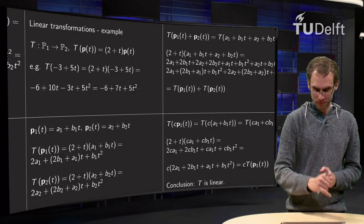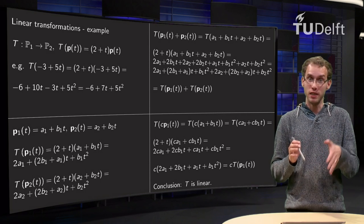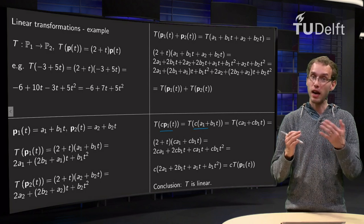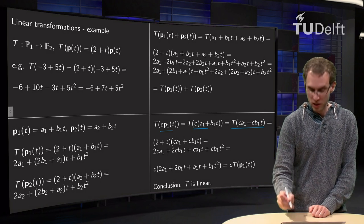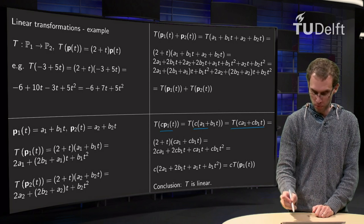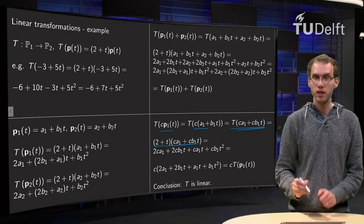We still have to check the second one. So what is the T of C times P1? Well, fortunately that's a bit easier. C times P1 is just C times a1 plus b1 times t equals C times a1 plus C times b1 times t. So we have to multiply this quantity here by 2 plus t.